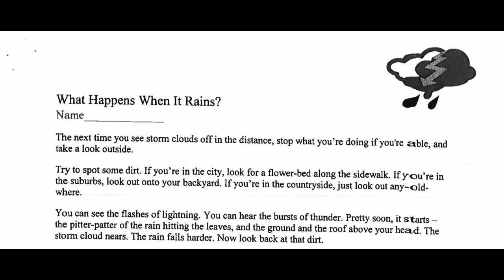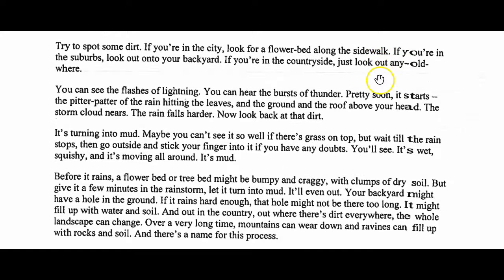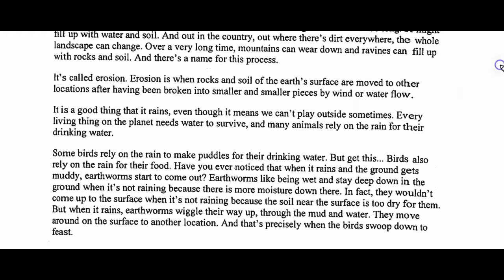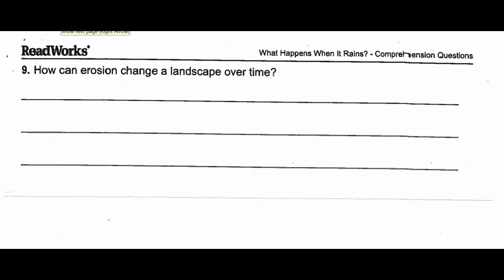The text tells you what erosion is. If I go back to the text, let's see, find the erosion. Here it is. Look. Oh, right here. Erosion is when rocks and soil of the earth's surface are moved to other locations after having been broken into smaller and smaller pieces by the wind or water flow. That's what erosion is. So then your question says, how can erosion change the landscape over time? You're going to complete sentences.